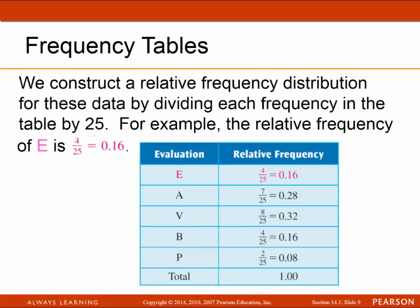Next we calculate the relative frequency by taking the frequency of each class and dividing it by the total. So 4 divided by 25 is 0.16, 7 divided by 25 is 0.28, and so on. That column must add up to 1.